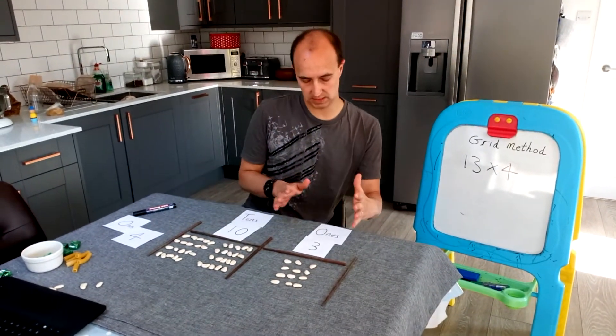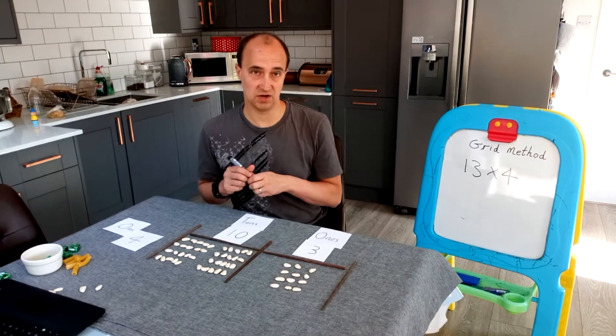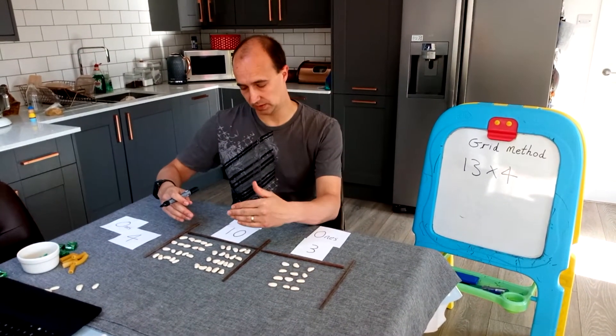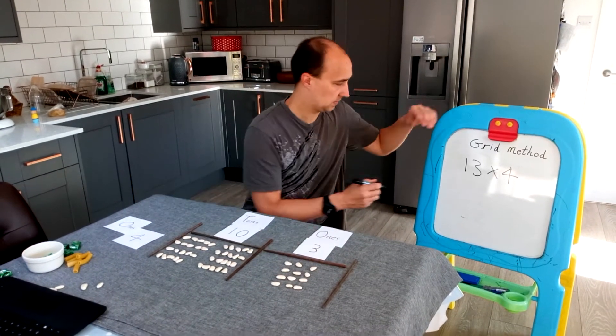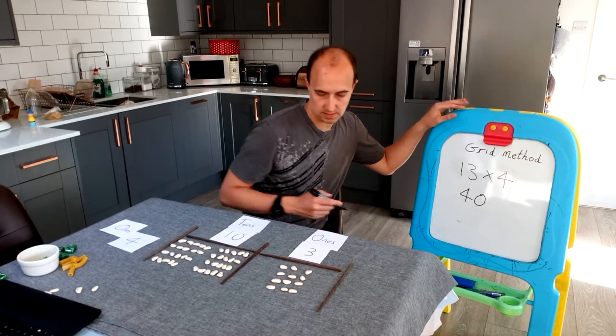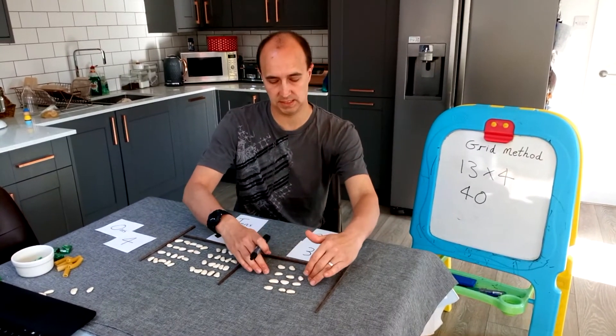So I've got my 13 times 4 set out as an array. So now the children just need to count up. So we've got 10, 20, 30, 40. So that's 40. And then I've got my 3, 6, 9, 12.